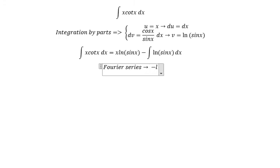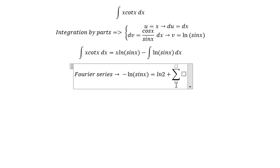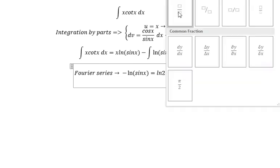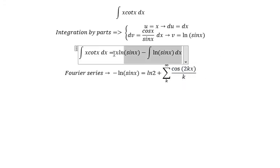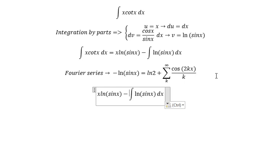Negative ln of sine s equal to ln 2 plus the summation k to positive infinity cos 2kx over k. We have a negative negative, so we put negative in here.